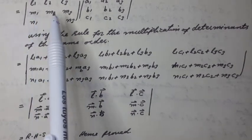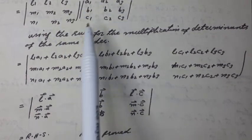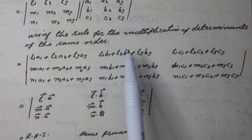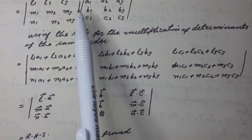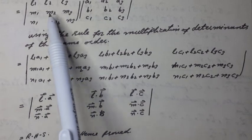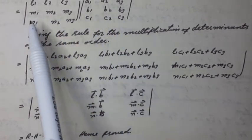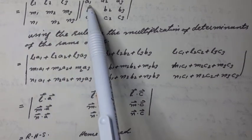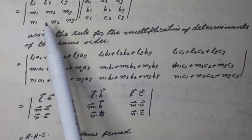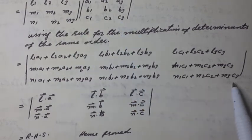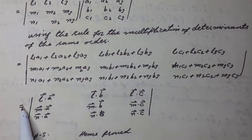it can be written as a determinant where the first row entries are: l1·a1 + l2·a2 + l3·a3, l1·b1 + l2·b2 + l3·b3, l1·c1 + l2·c2 + l3·c3. The second row entries are: m1·a1 + m2·a2 + m3·a3, m1·b1 + m2·b2 + m3·b3, m1·c1 + m2·c2 + m3·c3. The third row entries are: n1·a1 + n2·a2 + n3·a3, n1·b1 + n2·b2 + n3·b3, n1·c1 + n2·c2 + n3·c3.